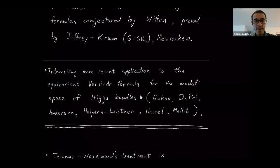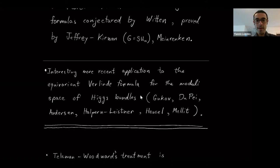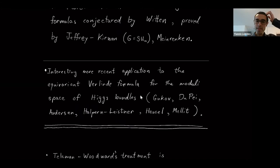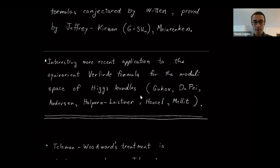One of the interesting more recent applications was to the equivariant Verlinde formula. This is a formula for the moduli space of Higgs bundles — a version of the Verlinde formula for that moduli space. It was conjectured by Gukov and Dupuis, then proved by various authors including Gukov, Dupuis, Anderson, also Halper and Leisner, and there's also a paper by Housel, Mellet, and Dupuis. It's closely related to the Telemann-Woodward formula, involving applying that formula and then proving quite non-trivial vanishing results for higher cohomology and QR equals zero results.